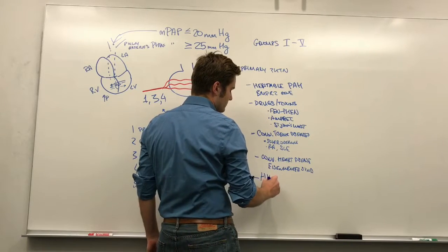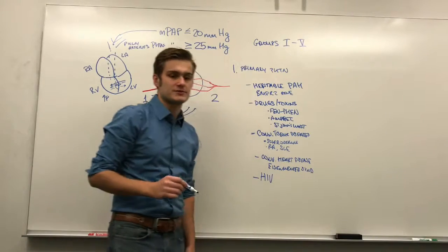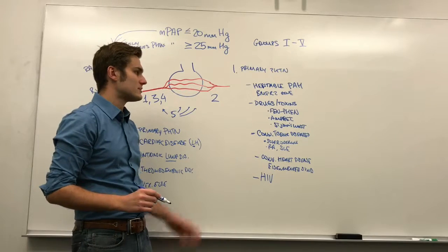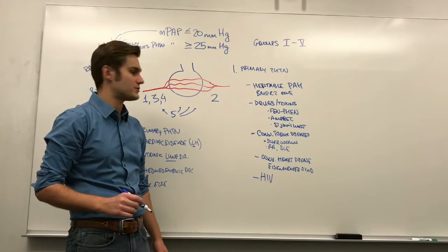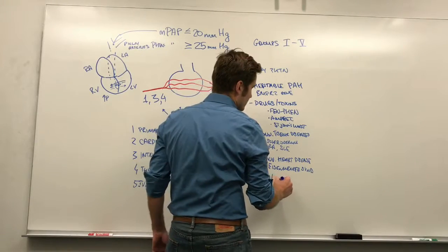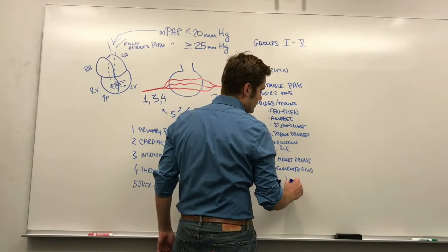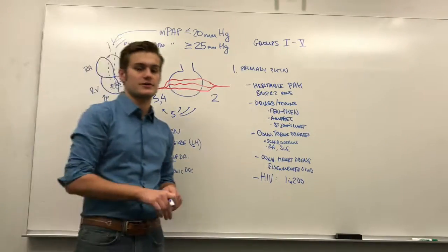And the last group, or the last kind of big disease is HIV. So, no one really knows why HIV causes pulmonary arterial hypertension, but the association is actually pretty significant. Something like one in 200 HIV patients is going to have pulmonary arterial hypertension.